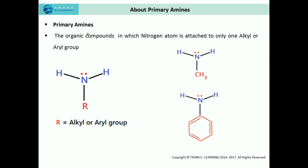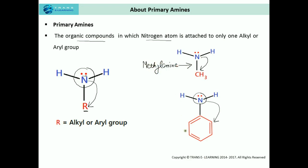First of all, what are primary amines? Primary amines are compounds in which the nitrogen atom is attached to only one alkyl or aryl group. You can see here that this nitrogen atom bearing the lone pair of electrons is attached to only one alkyl group, or in this case, only one aryl group. So these are known as primary amines. This nitrogen attached to a methyl group gives methylamine, and when attached to an aromatic ring, gives aniline.